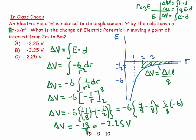So the result is minus 2.25 volts. Looking at our diagram, delta V is negative, which seems to make sense.